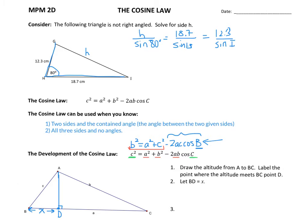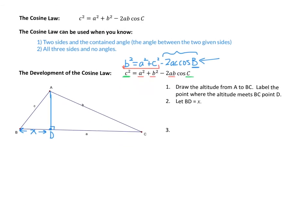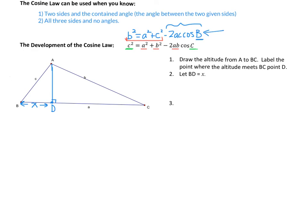Side A — I'm just going to move my diagram up — side A, which I have labeled here, is actually all of this length. So DC would have to equal all of A minus X, which I'll write in: DC is A minus X.